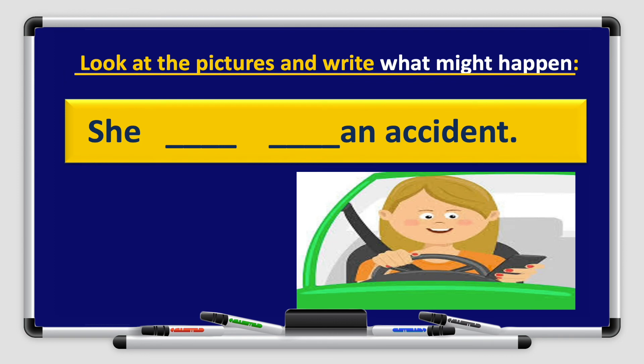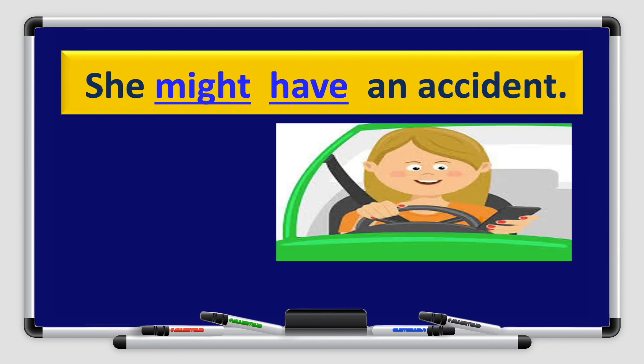Number two: 'She ___ an accident.' Look at the picture — she is using her mobile phone while driving. What might happen? Excellent job boys and girls — 'She might have an accident.' 'She' is the subject, 'might' is the modal verb to express possibility, 'have' is the verb in the infinitive form, and 'an accident' is the rest of the sentence.